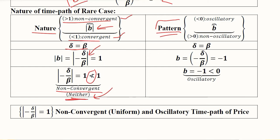We will see diagrammatically how this neither can be understood. On the other side, the pattern: if it is less than 0 it will be oscillatory, if it is greater than 0 it will be non-oscillatory.